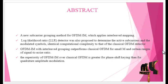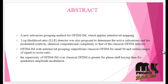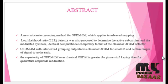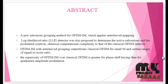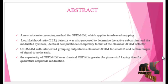OFDM-IM with interleaving outperforms classical OFDM for small M and certain ranges of signal-to-noise ratio. The performance of OFDM-IM is studied in terms of achievable rate assuming an AMRE constellation and channel state information available at the receiver.